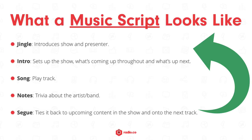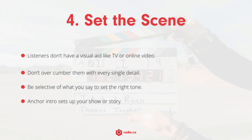The basic structure of a music show goes like this: first a jingle is played, which sets up the scene and introduces the show and presenter. This is followed by an introduction covering what's coming up — competitions, guests, and so on. Then a track is introduced and played, followed by some trivia about the artist or band, which provides a smooth transition into the next track. Most music radio shows repeat this process throughout the show to accommodate new listeners tuning in halfway through.